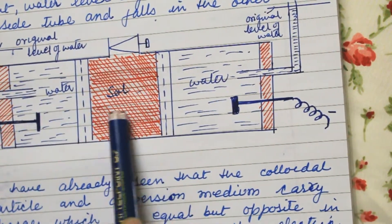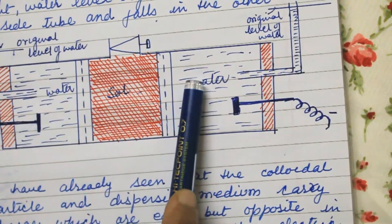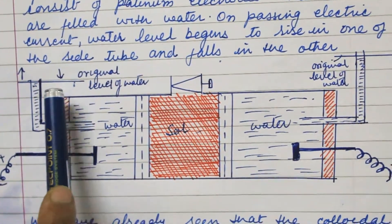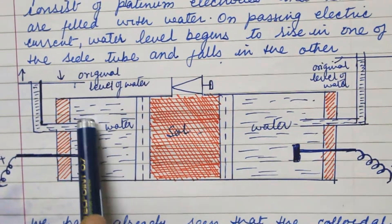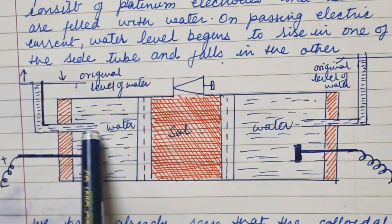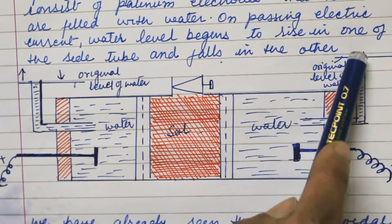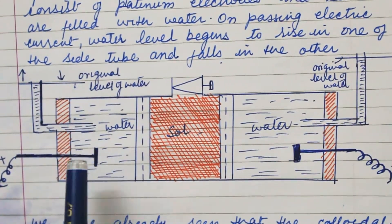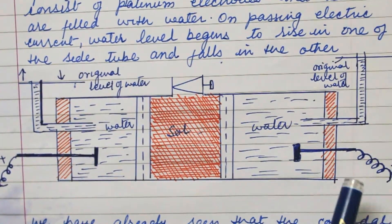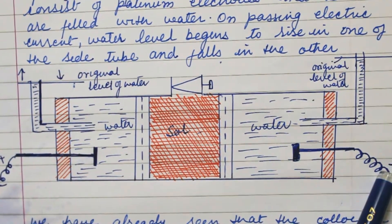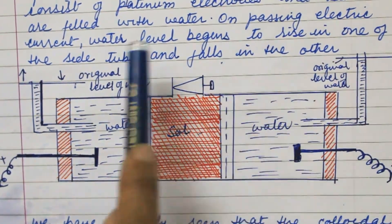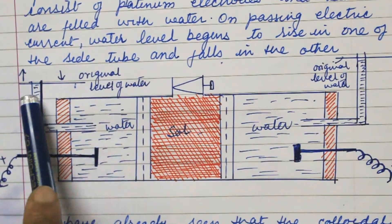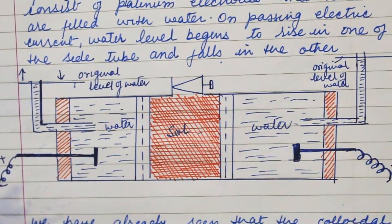This is the sol or colloidal particle, and this is the water level. This is the original level, which shifts downward because all the ions or the water — the dispersion medium — shift to one side, making the level rise on one side and lower on the other. This is the platinum wire or platinum electrode; this is the anode and this is the cathode. On passing the electric current, the water level rises on one side and falls on the other side.